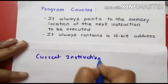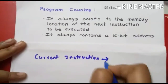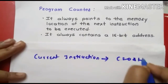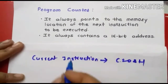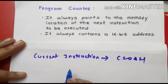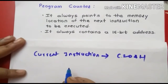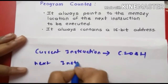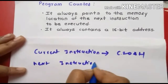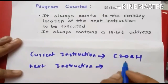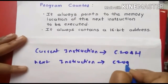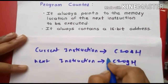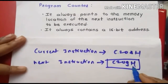For example, suppose the current instruction being executed has the memory location C208H. Then the program counter will point to the memory location C209H. So if the next instruction has memory location C209H, the program counter will point to that memory location C209H.